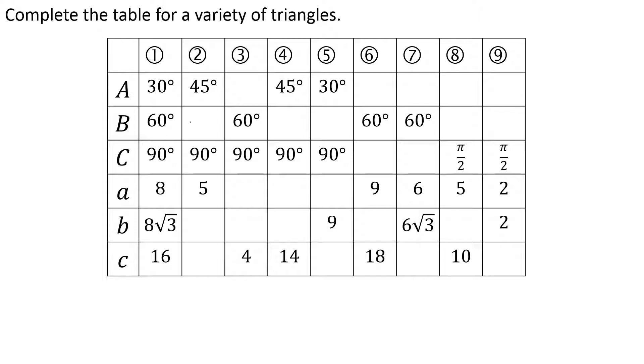Triangle number 2, remember how to do these? 45 degrees because it has to add up to 180. Of course the legs have to be equal, so the other leg will be 5 and the hypotenuse will be 5√2.